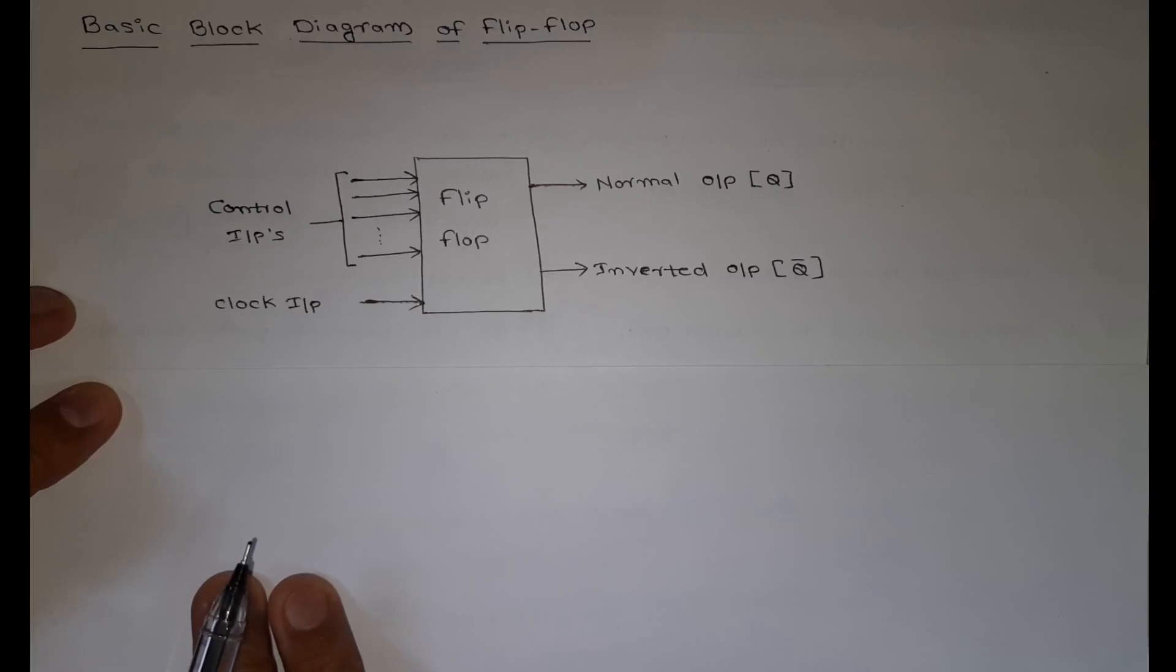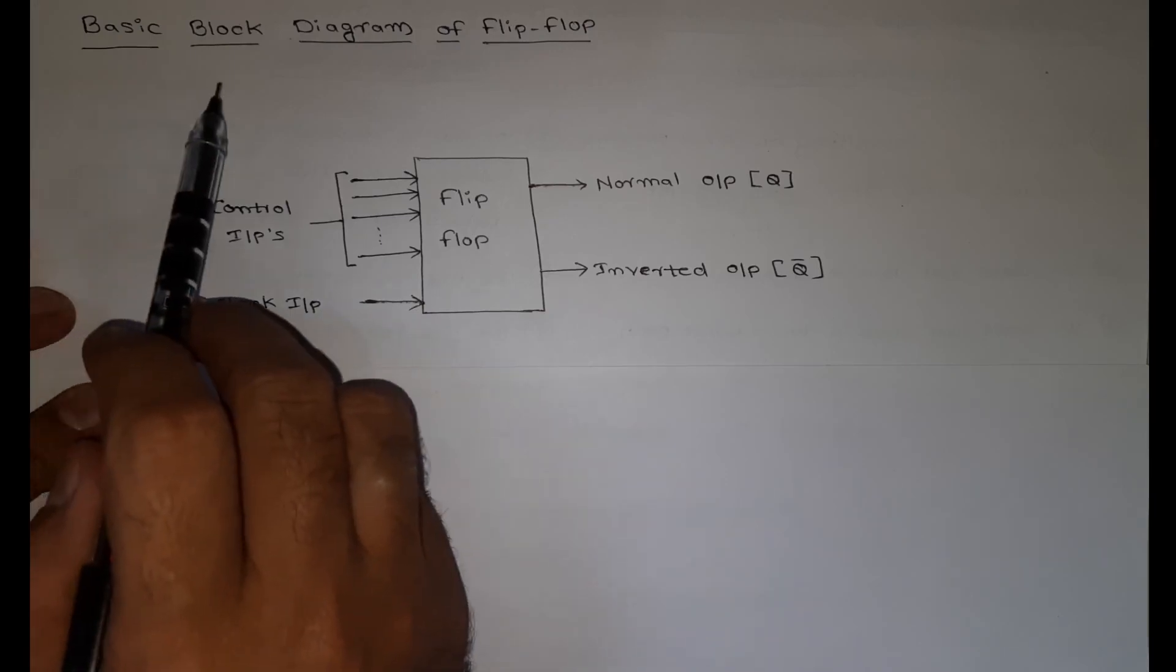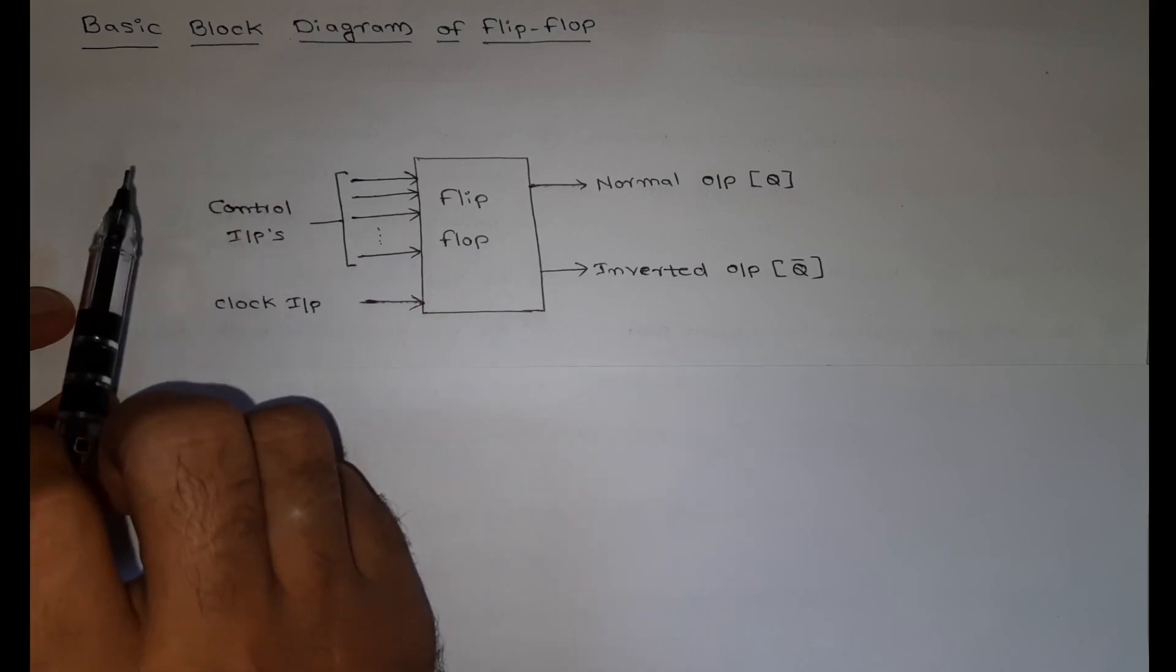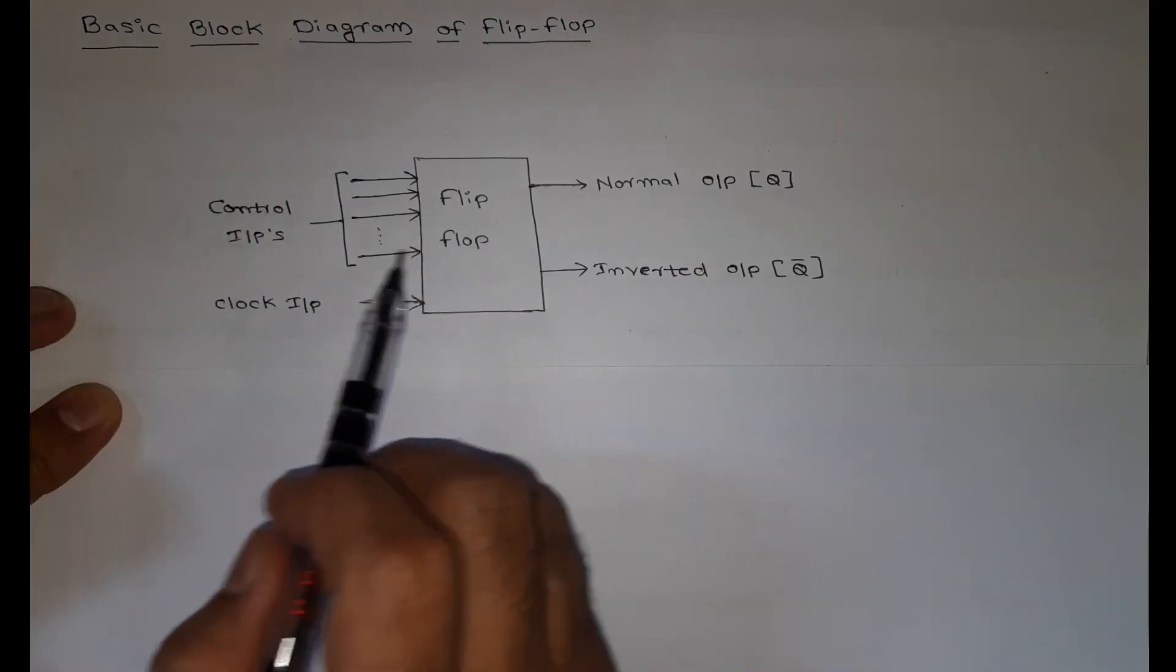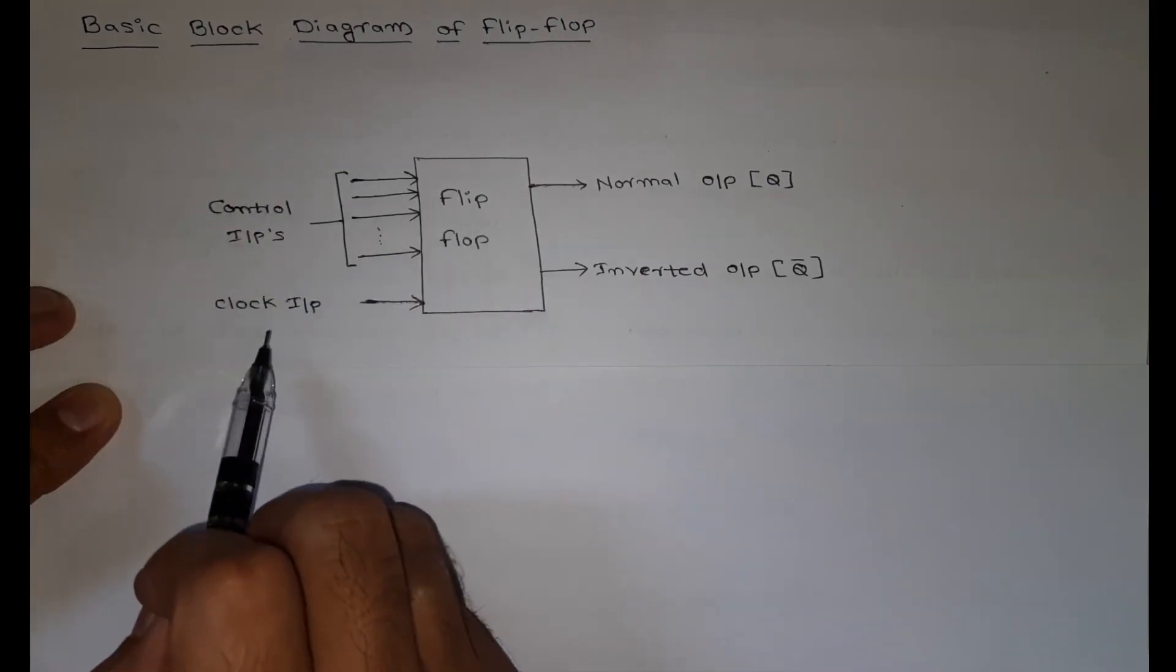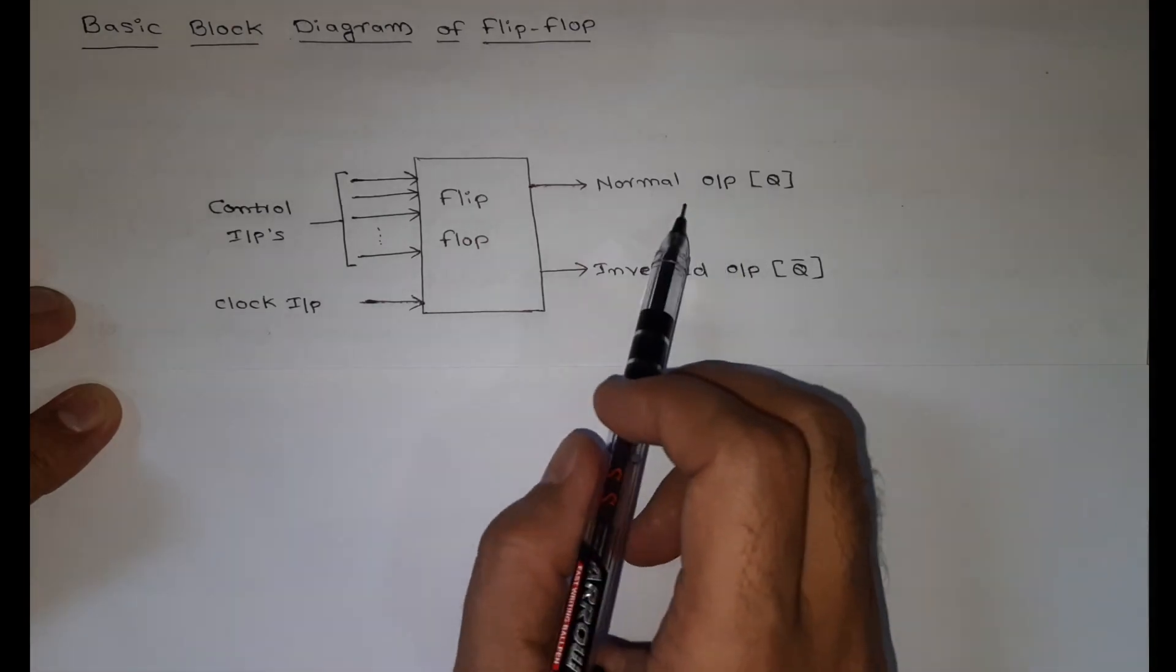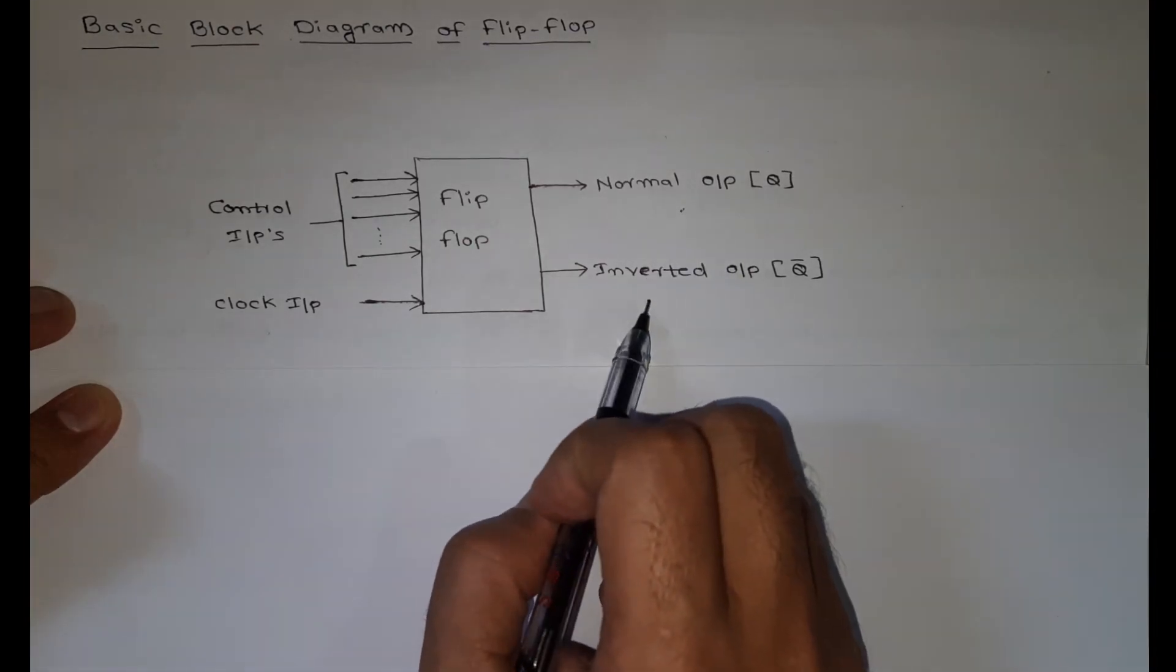Hi, in this lecture, let us see the basic block diagram of a flip-flop. This flip-flop has control inputs, clock input, normal output, and inverted output.